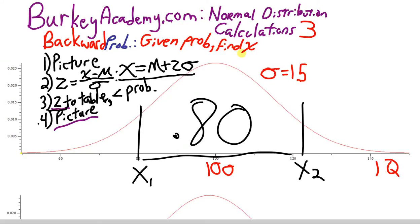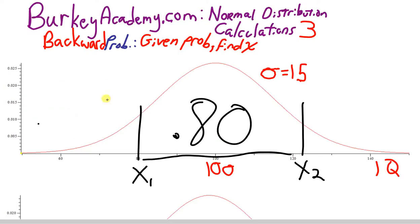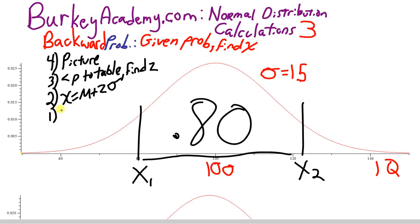Let me rewrite the steps in reverse order for the backward kind of problem. Four: draw a picture of what you're talking about. Three: take a less than probability to the table to find a z, and here we're going to be finding two z's. Second: plug the z into this formula to find your x or x's, so x equals the mean plus z times the standard deviation. And then one: just go back to your picture and make sure that everything looks reasonable.